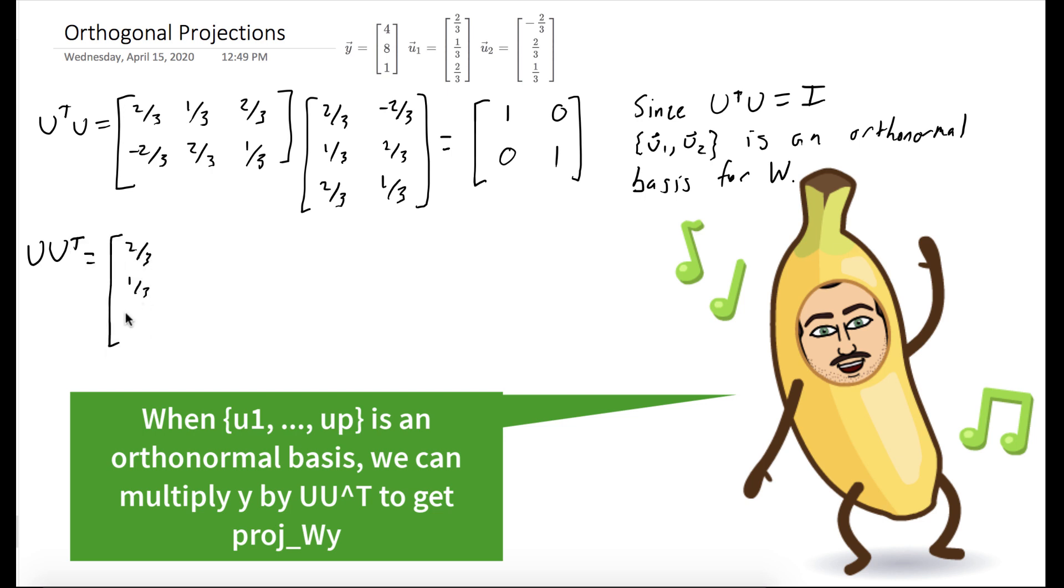We'll now compute U times U^T. Again, this is just matrix multiplication. We get the 3 by 3 matrix: 8/9, -2/9, 2/9, -2/9,